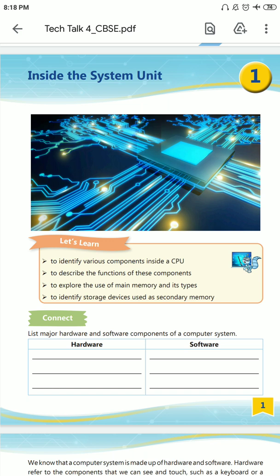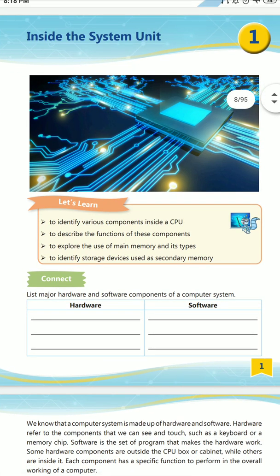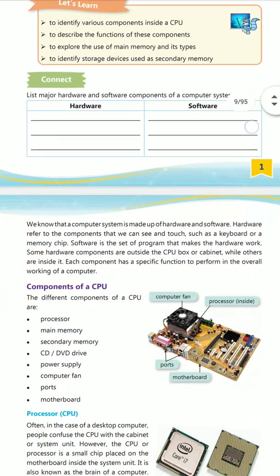Now we are looking at some hardware and software used in our computers. Hardware examples include CD, DVD, RAM, hard disk, and so on. There are two types of software: application software and system software.